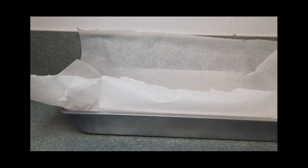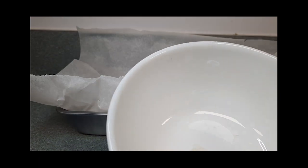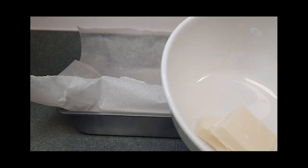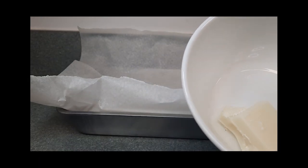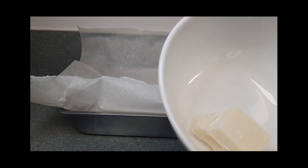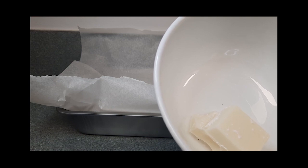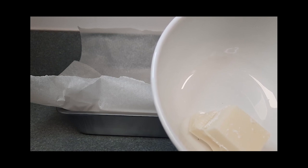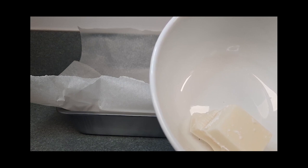The next step is get your microwave-safe bowl and put your square of vanilla candy coating in it. We're going to microwave it on high for about 45 seconds, then stir the candy coating until smooth. You may need to continue microwaving in 15-second intervals until melted and smooth.